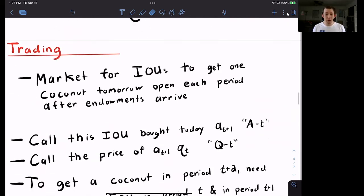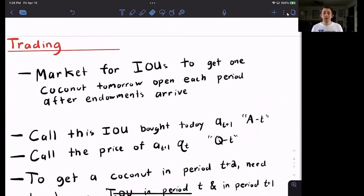Now let's talk about trading in the sequential market. So similarly to the ADE economy, we're going to have IOUs for coconuts. So I trade a promise to pay one coconut tomorrow. Now, instead of all the trading happening before time equals zero...